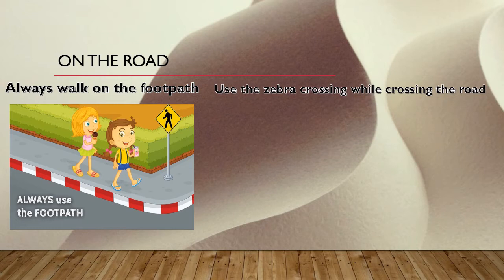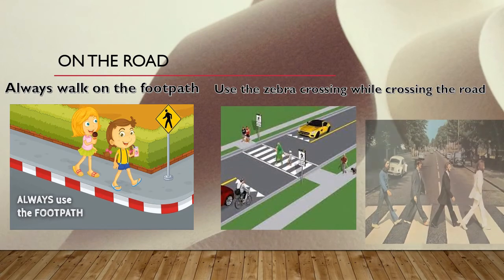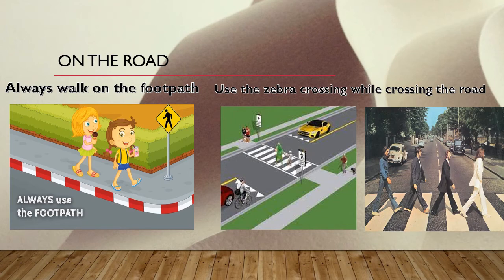Second rule: use the zebra crossing while crossing the road. When you cross a road, you should use the zebra crossing. Always walk on the footpath — that's the first rule. Second: use the zebra crossing while crossing the road.